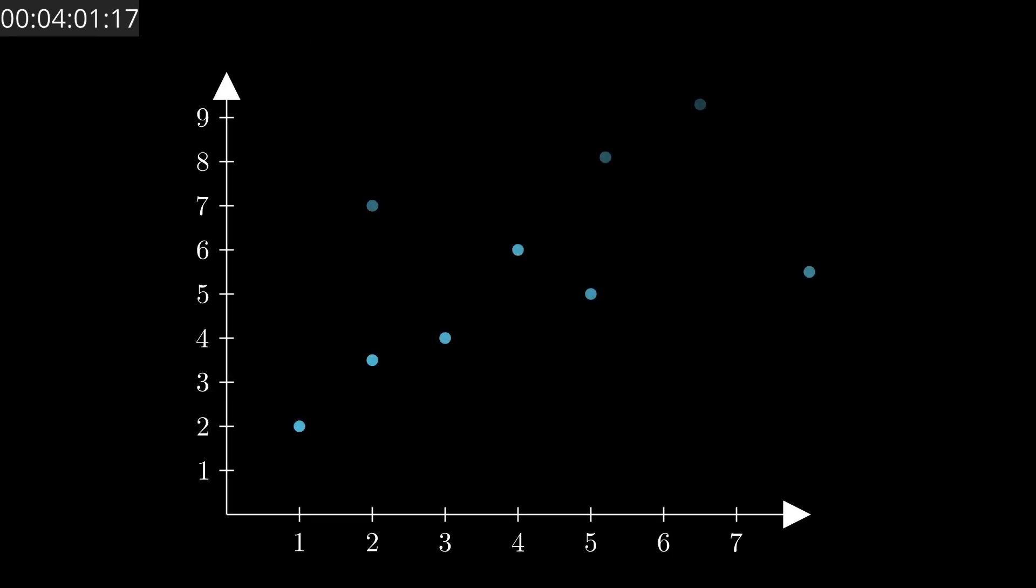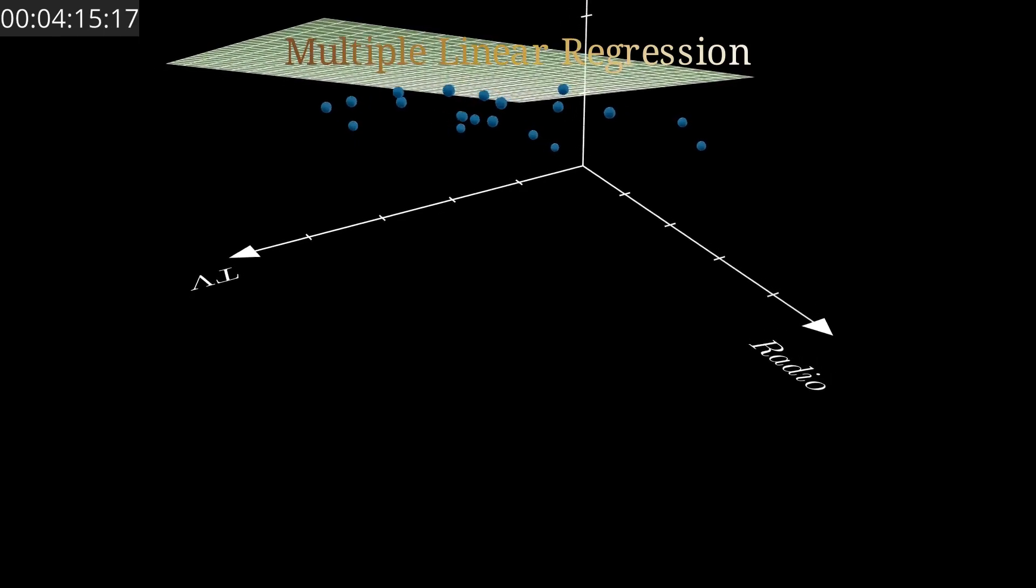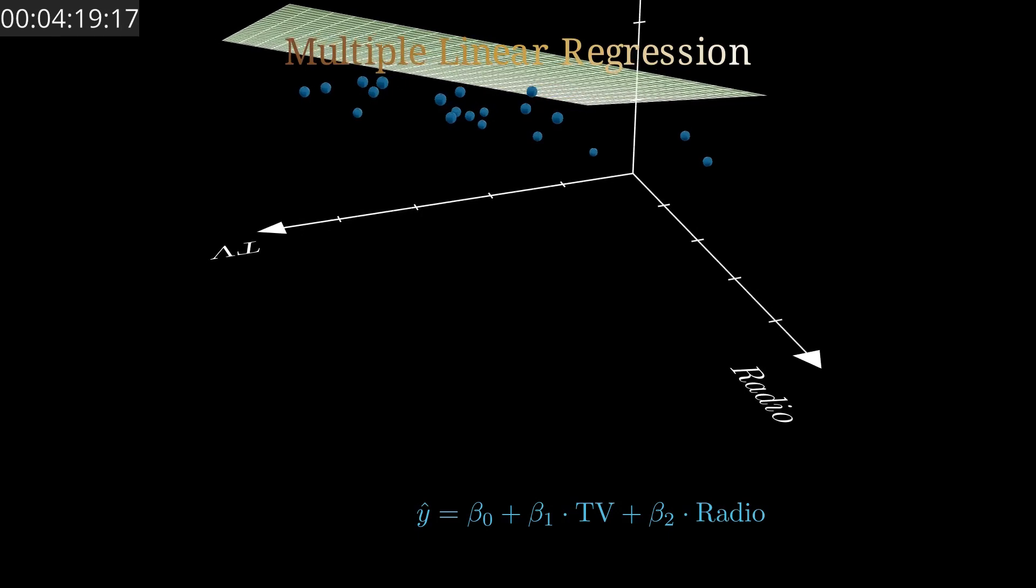Everything so far has been under the scope of a simple linear regression, where we use only one predictor, which is the money spent on TV. More complex models involve multiple predictors. For example, measuring both social media and TV ads' effect on sales. That's a multiple linear regression problem, but the core idea remains the same.